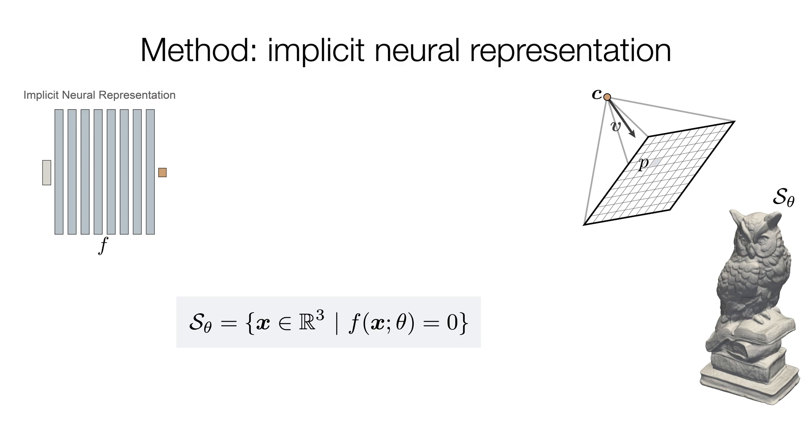The camera orientation and pixel define a viewing direction, and we can trace for the first intersection of the viewing ray with the implicit surface.